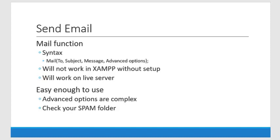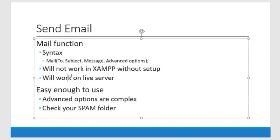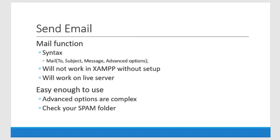The mail function is not going to work in XAMPP unless you configure things to work — for instance, if you use Gmail, you'd need to set up your Gmail credentials in XAMPP. But when you put this on the live web server, it will work. These emails are pretty likely to get caught in a spam filter — spam filters are meant to block automated emails, and this is essentially an automated email tool. Syntax is pretty easy: it's called mail, this is who it goes to, here's the subject, here's the message. Advanced options are a terribly complex subject — we're not going to use those.